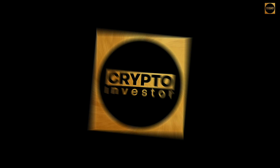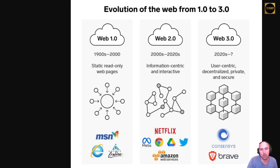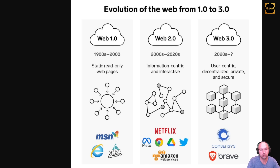We're going to be talking about what is Web 3 and how is it different from Web 1 or Web 2. An image demonstrates that Web 1.0 is very static web-only pages, like MSN, AOL Explorer, that sort of thing. Web 2.0 is more of the Facebooks, the social media, where you can read and write on the actual website — information-centric and interactive. That's your Facebook, Meta, Netflix, Google Drive, Twitter, Amazon Web Services.